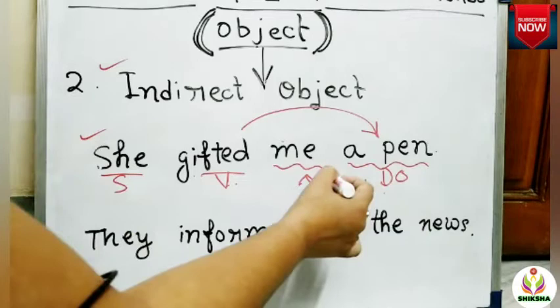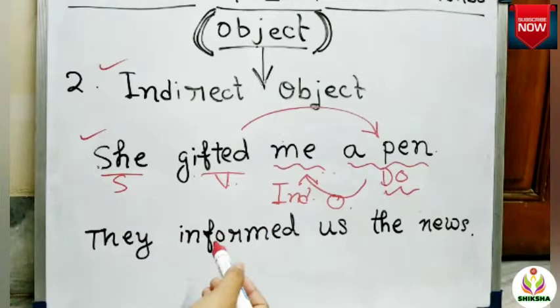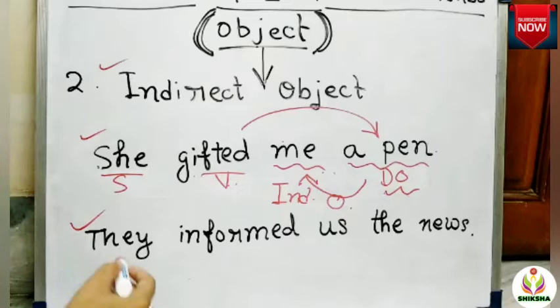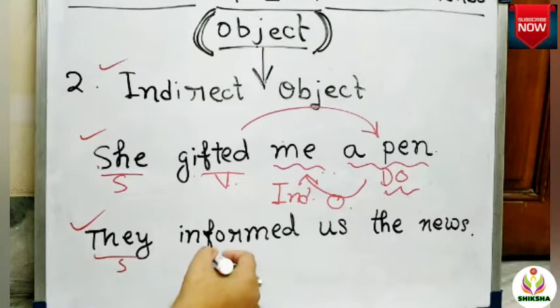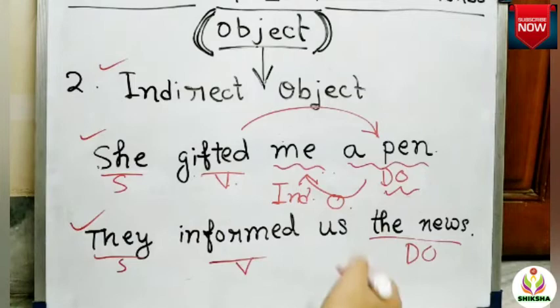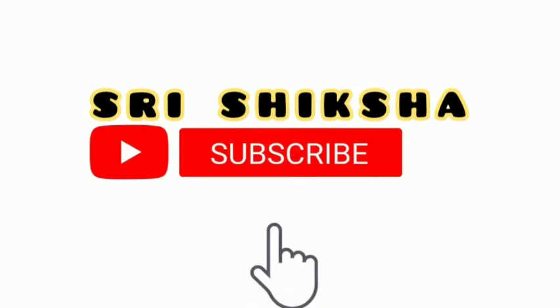Now if I ask 'She gifted a pin to whom?' — to me. So 'me' is receiving the direct object, making it the indirect object. In other words, an indirect object is the word that receives the direct object. Simply put: ask 'what' to the verb and you get the direct object; ask 'whom' to the verb and you get the indirect object. Another example: 'They informed us the news.' They informed what? The news — so 'the news' is the direct object. They informed the news to whom? To us — so 'us' is the indirect object.